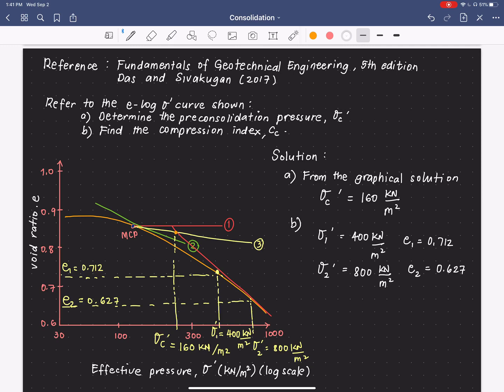So, if you recall, from our derivation, Cc can be calculated as e1 minus e2 divided by log of σ'2 over σ'1.